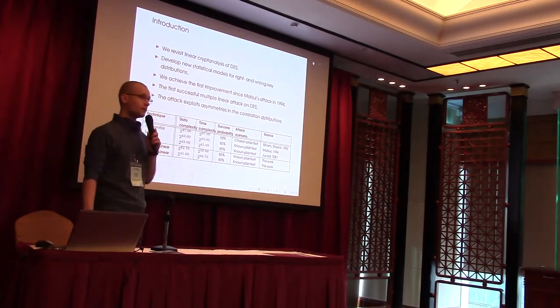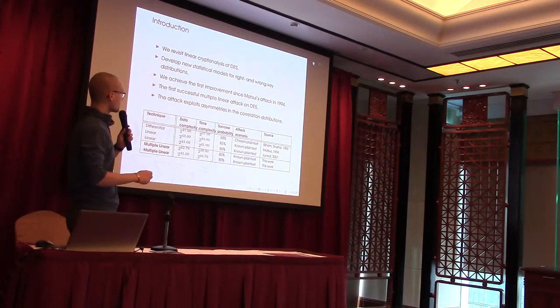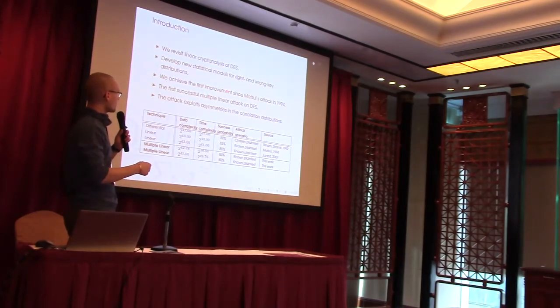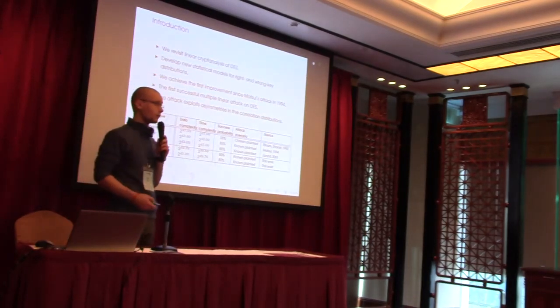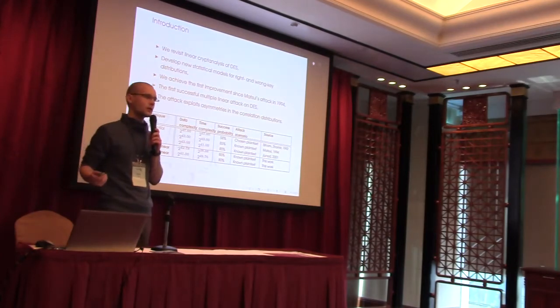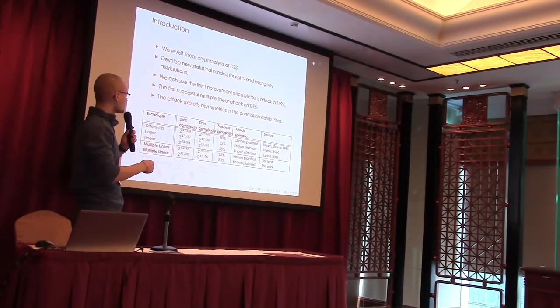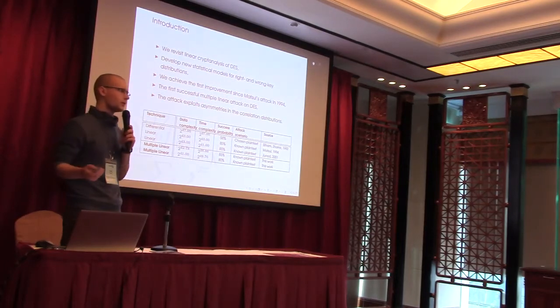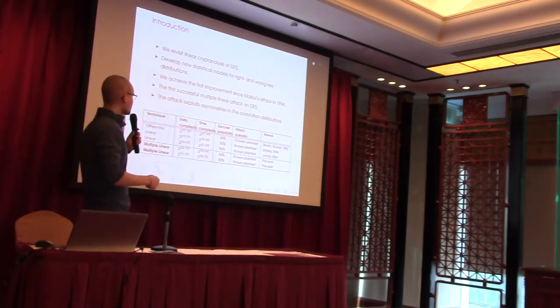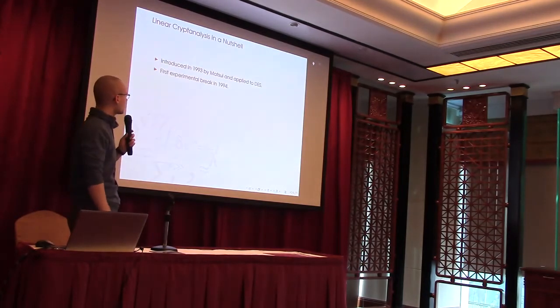What we did was we wanted to revisit the linear cryptanalysis of DES by building some new statistical models for both the right key and the wrong key distributions in this attack. This is the first real improvement of the attack since Matsui's attack in 1994, and it's the first successful attack on DES that uses multiple linear approximations. What's most interesting is that this attack exploits some asymmetries in these distributions.